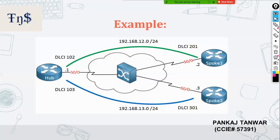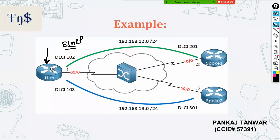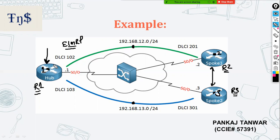One more thing before we move on: in Frame Relay, if you look at your hub router running EIGRP, there was direct neighborship between different locations. For example, if this is router R1 (hub), R2, and R3 (remote sites), and you do 'show CDP neighbor' at R1, you would see both R2 and R3 directly — because the ISP provided a flat Layer 2 connection, so devices could see each other directly in CDP neighbors.